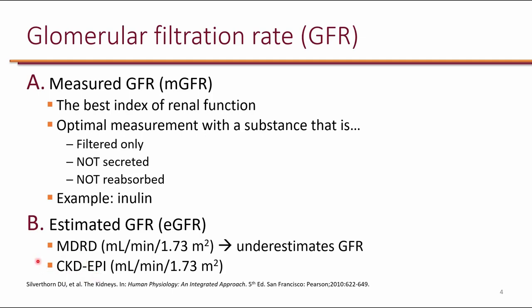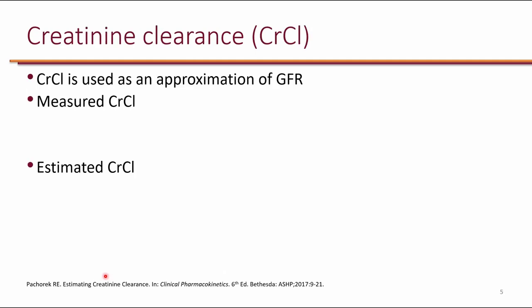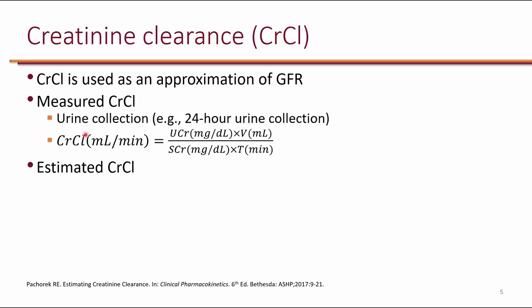These equations are validated in patients with CKD specifically, and MDRD tends to underestimate GFR in general, so CKD-EPI happens to be a more accurate equation compared to MDRD. Another approach is to use creatinine clearance as an approximation of GFR. Just like GFR, we can either measure or estimate creatinine clearance. The way we measure it is by collecting urine, typically over a 24-hour period.